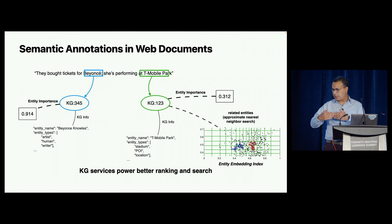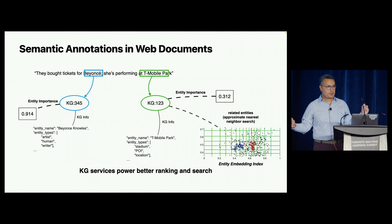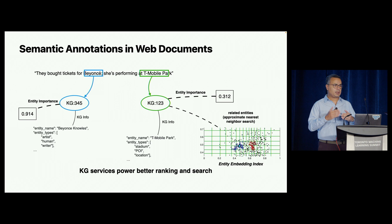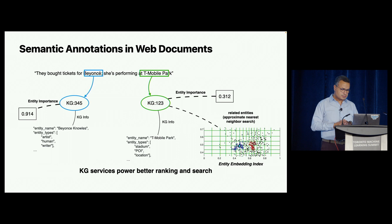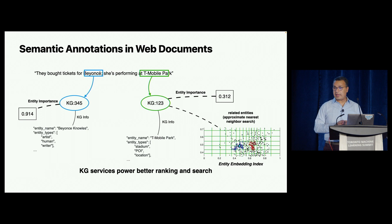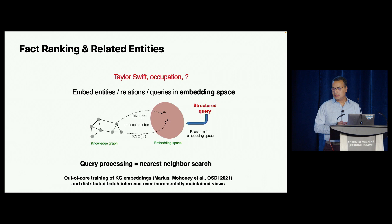Another interesting use case is semantic annotation on web documents. Besides annotating the query itself, sometimes we go and annotate every unstructured piece of information we have to help with web ranking, recommendation, putting the right song in front of you, and search on the web. Same technique, but the question is scale. There will be a bunch of work coming on how to annotate web-scale documents with a web-scale knowledge graph — there are interesting engineering problems there we'll be talking about soon.